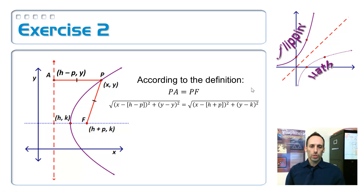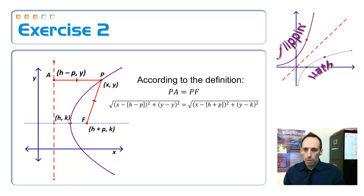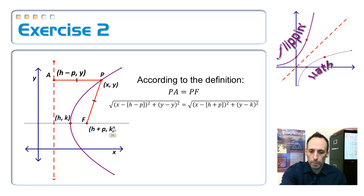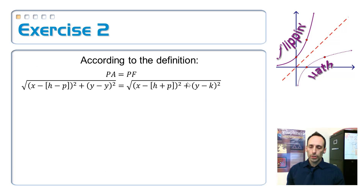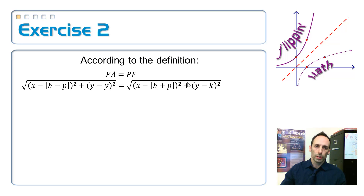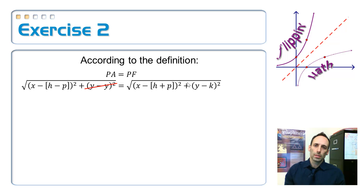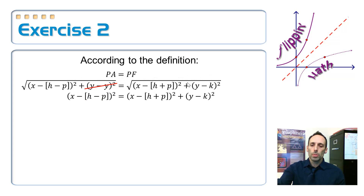That is nothing like the actual equation — there are no square roots in it at all. One of the ways that you simplify an equation like this is just to square both sides. Then there are no square roots anymore. I ran out of room, so I'm continuing on a new slide. Now I'm going to square both sides, and that y minus y term is just zero, so I canceled that one out.